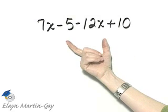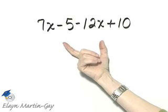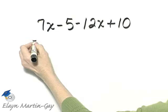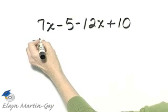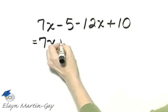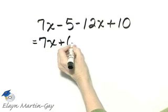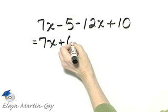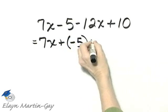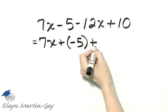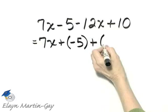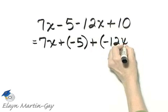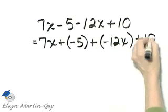Here we will simplify by combining like terms. Let's first take a moment, if you would like, and rewrite each of these as addition. So that would be plus the opposite of 5 is negative 5, plus the opposite of 12x would be negative 12x, and then plus 10.